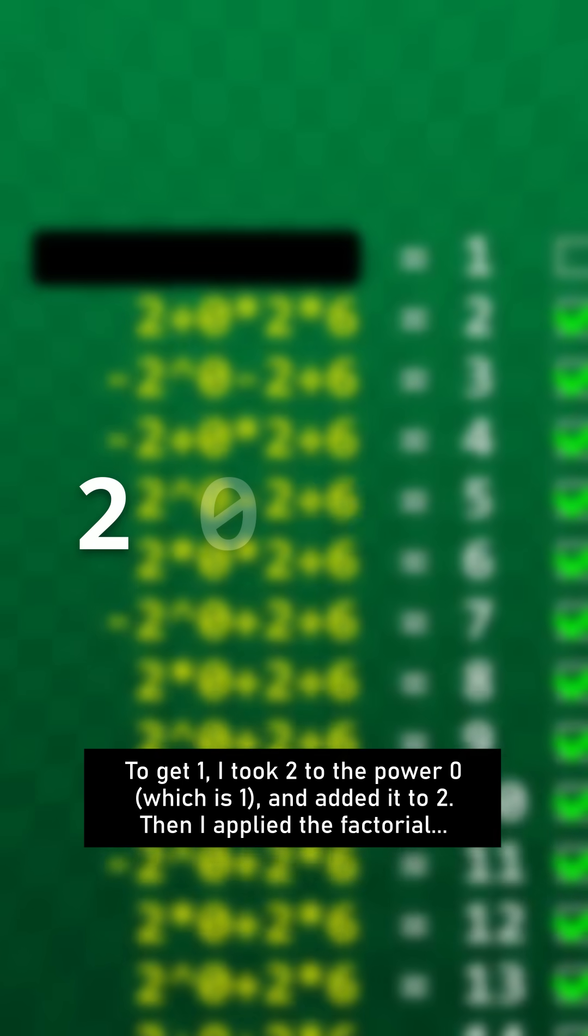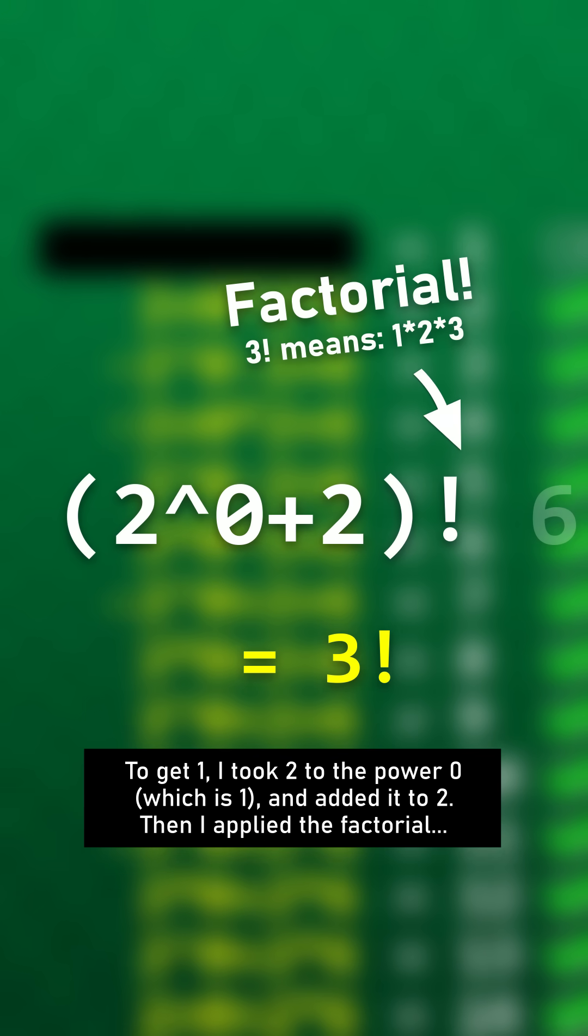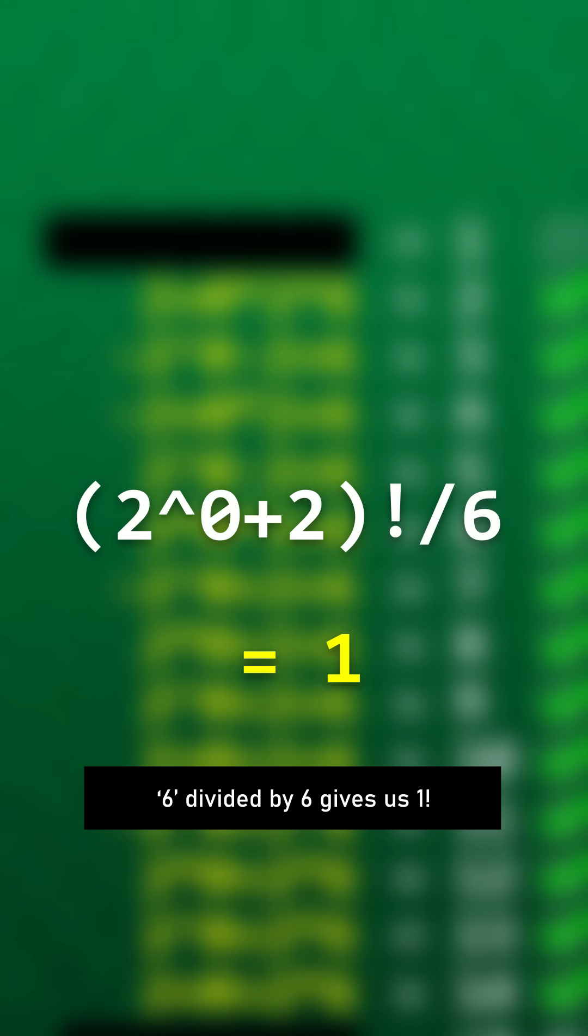To get 1, I took 2 to the power of 0, which is 1, and added it to 2. Then I applied the factorial. 6 divided by 6 gives us 1.